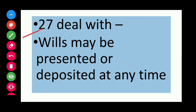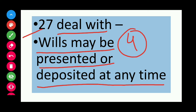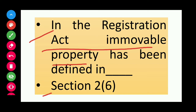Section 27 deals with wills — wills may be presented or deposited at any time. Other documents must be filed for registration within 4 months, but for a will there is no time limit. Section 27 is important. In the Registration Act, immovable property has been defined in Section 2, Subsection 6.